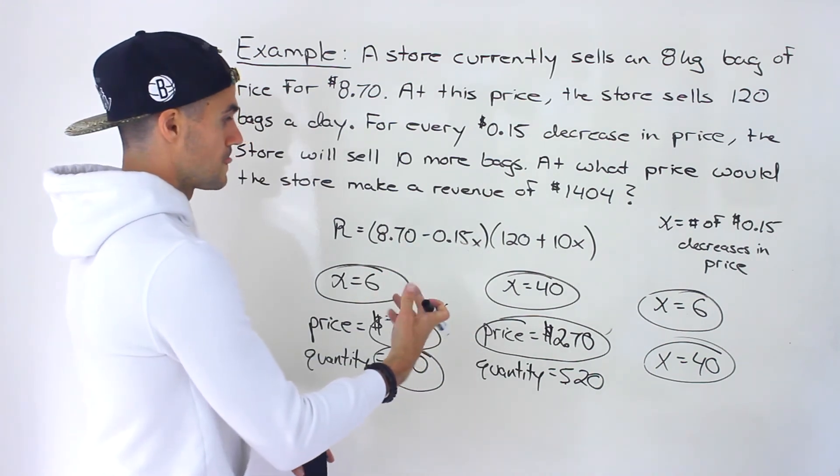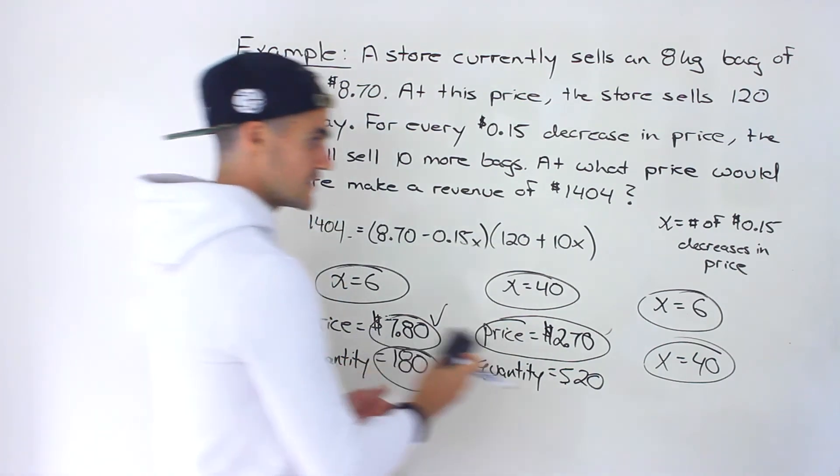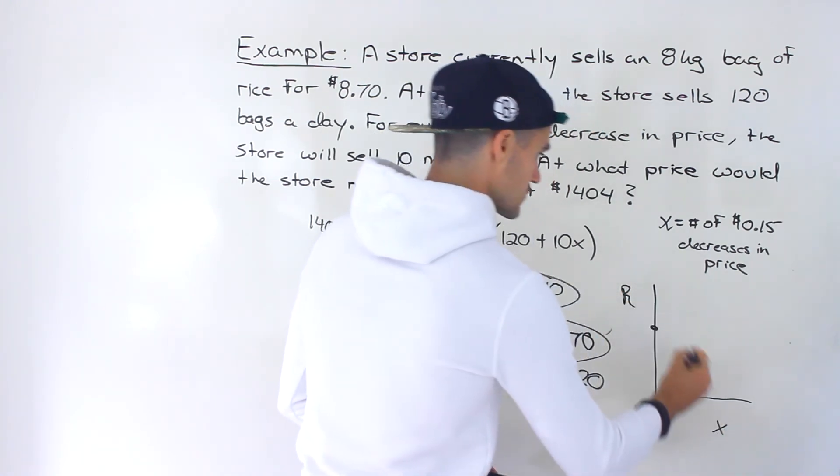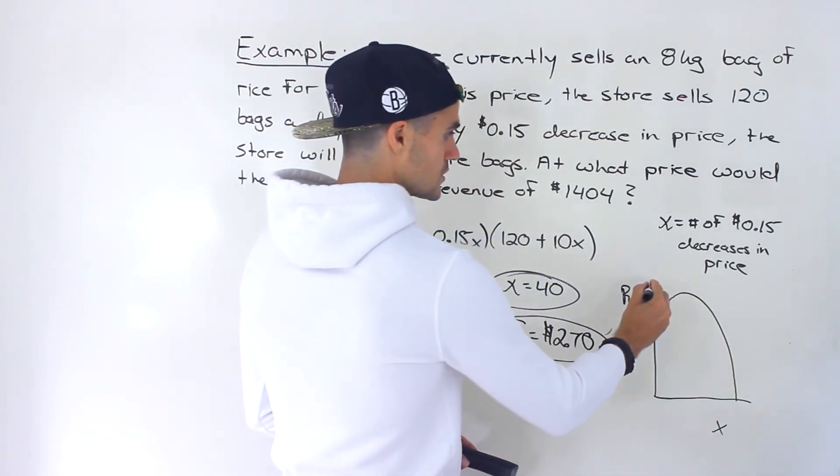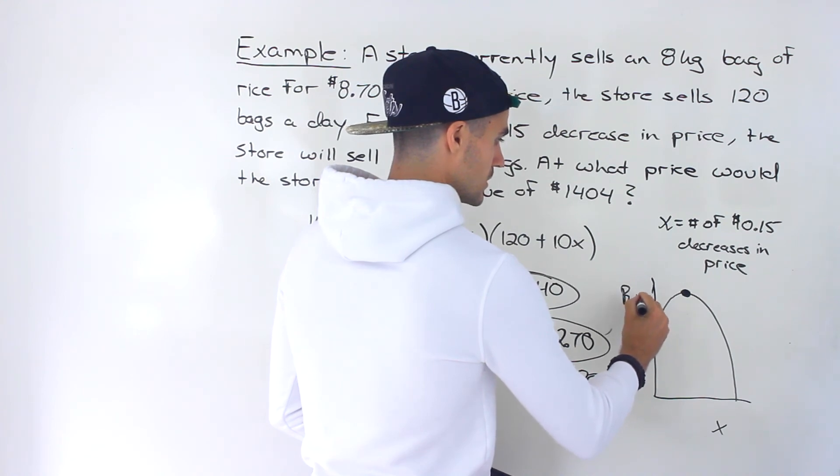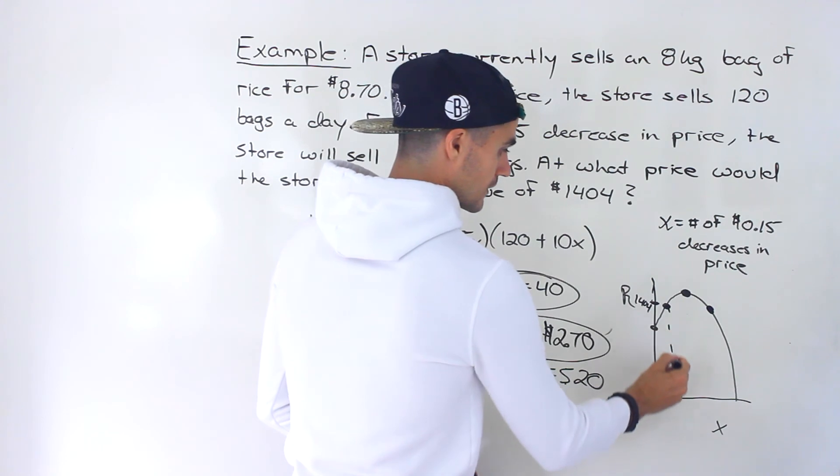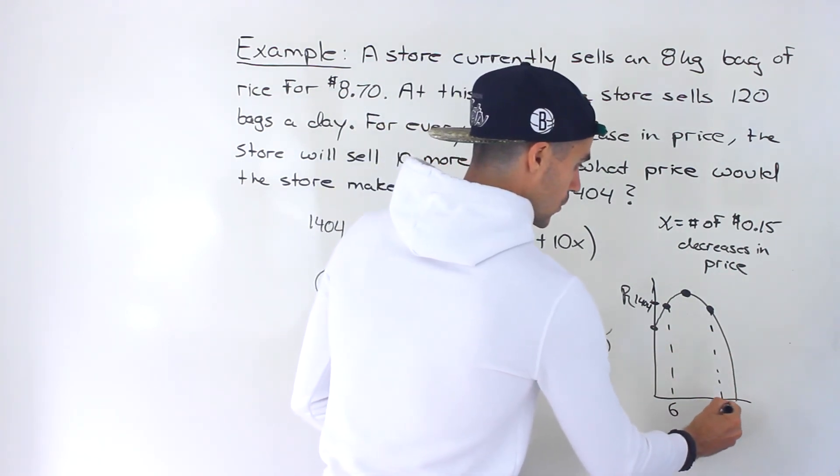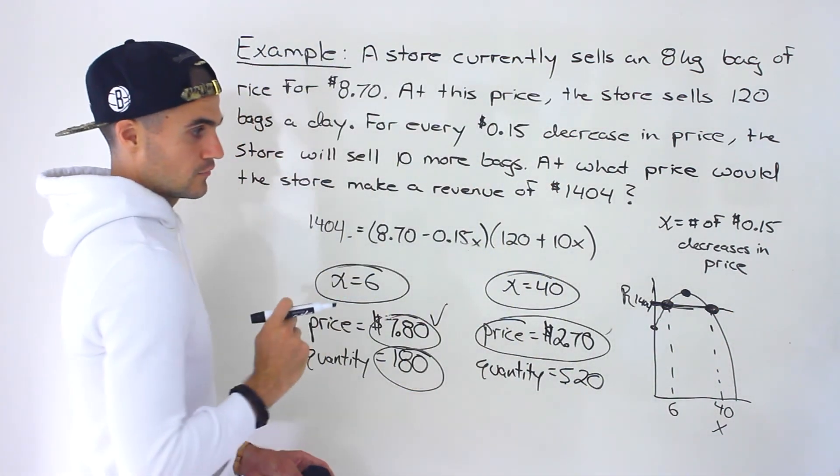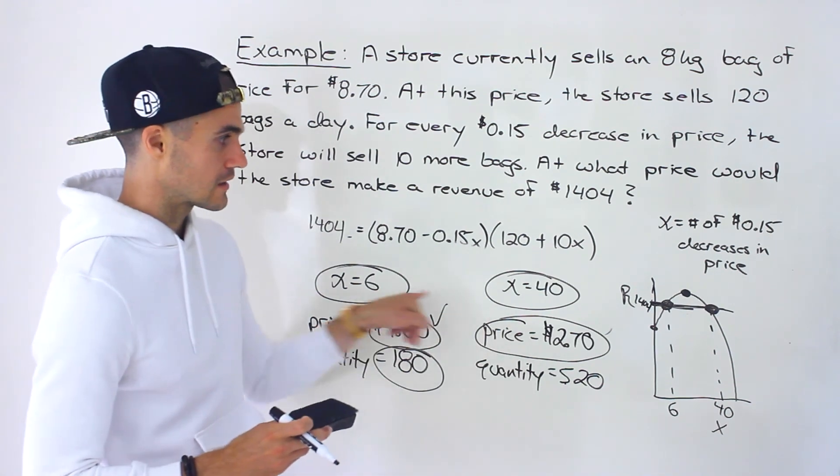So that would be another potential solution. So there's actually two solutions to this equation that we solve. Remember, there was that 1,404 at the beginning that we had. The way this looks visually, if we were to graph it out, we would have revenue over here and then we'd have X over here. It would end up being something like this. And where the solutions are coming from, the two solutions, is here's the maximum revenue. We don't know what that would be. That's not what we were solving for in this question. But if we had a revenue of 1,404, we can get that revenue either here or over here. So it would be either at an X value of 6 or at an X value of 40. This revenue we would hit at either of those points. Because remember, this is going to be a quadratic that opens down.